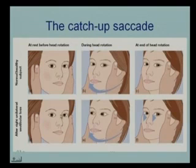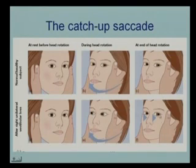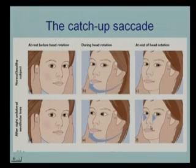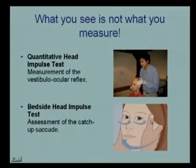Here's a subject looking at the target. The head is rapidly turned to the right; the eyes do not move with the head as in a normal subject, and therefore they need to make a corrective saccade to come back to target. This observable corrective saccade is the clinical sign of canal paresis, but we need to know that what we measure when we measure a head impulse test is not exactly what we see at the bedside.